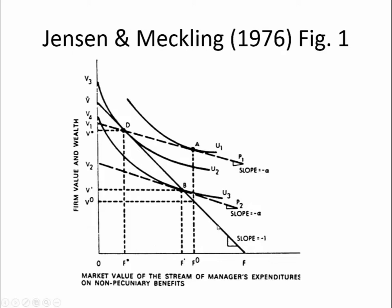What actually happens is somewhere in the middle of that line — and how does that get determined? We need to look at what the manager wants, what they desire. The way we do that is with a construction called the indifference curve. U1, U2, and U3 are indifference curves. The manager is equally happy at any point along any of these curves, but some curves are better than others. The further up and to the right you go, the happier the manager is. The manager would prefer to be on U1; if they couldn't be on U1, they'd be fine on U2; but they would prefer U2 to U3. There are many, many more of these curves — we've just shown three here for illustration.